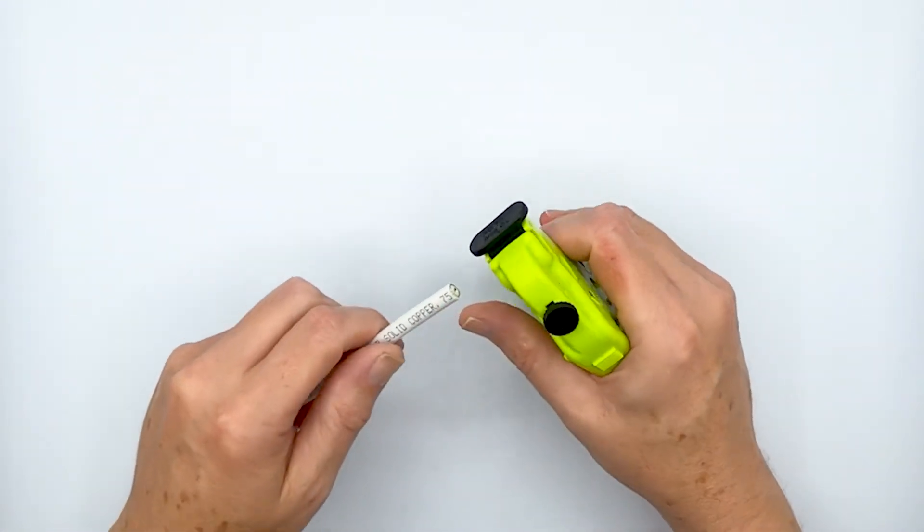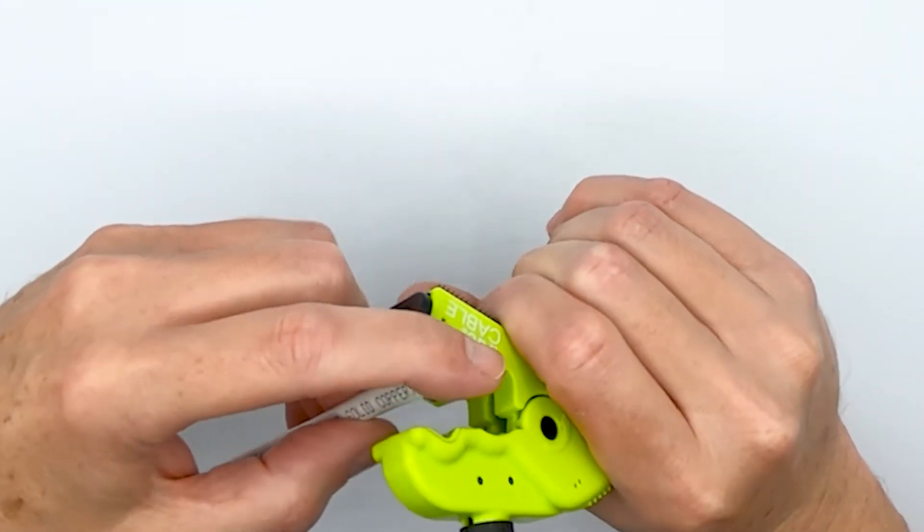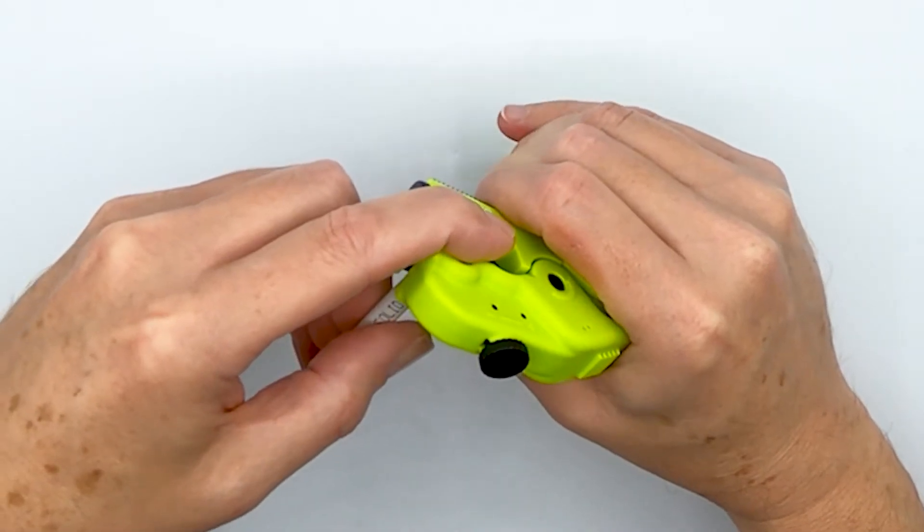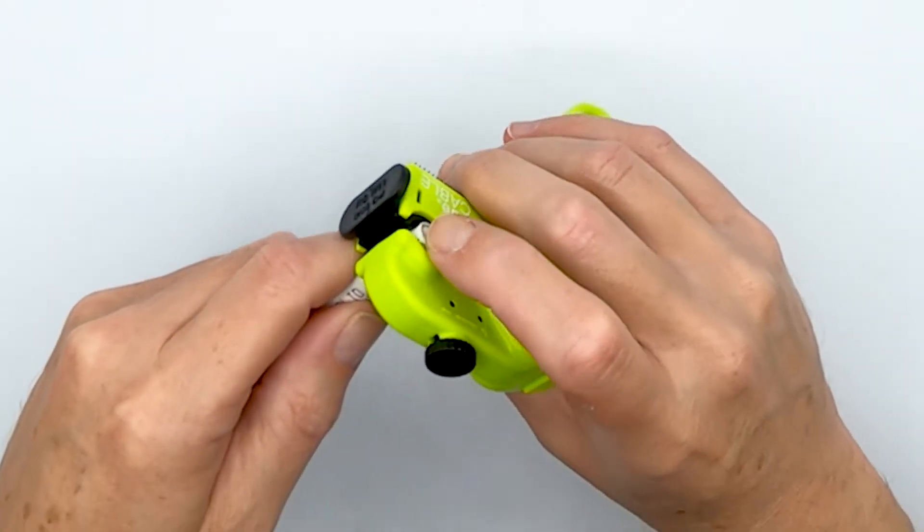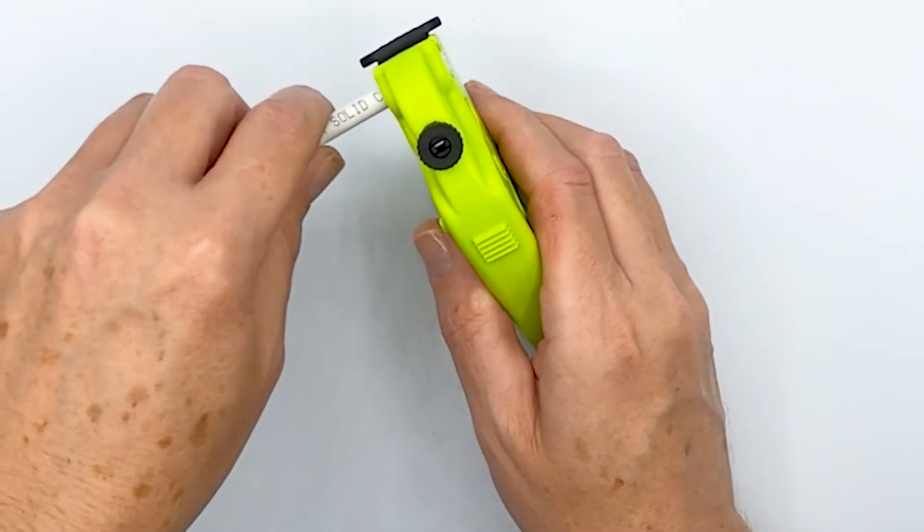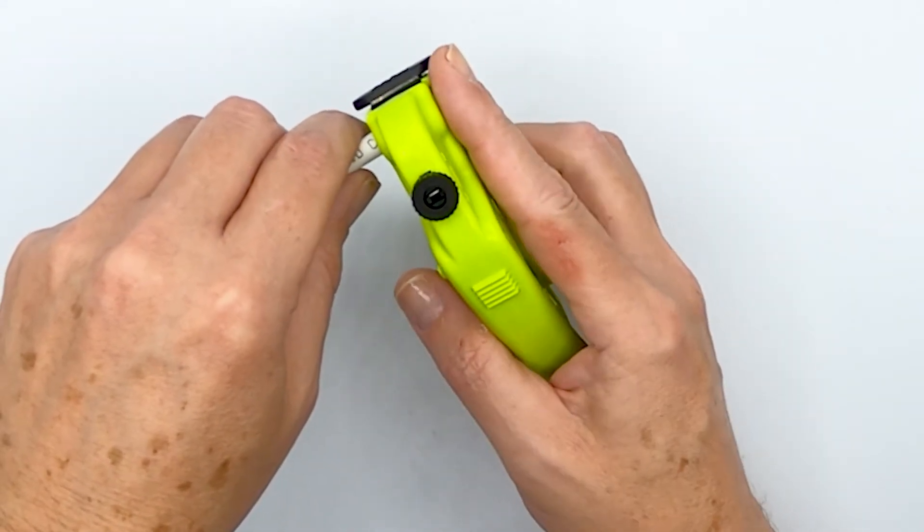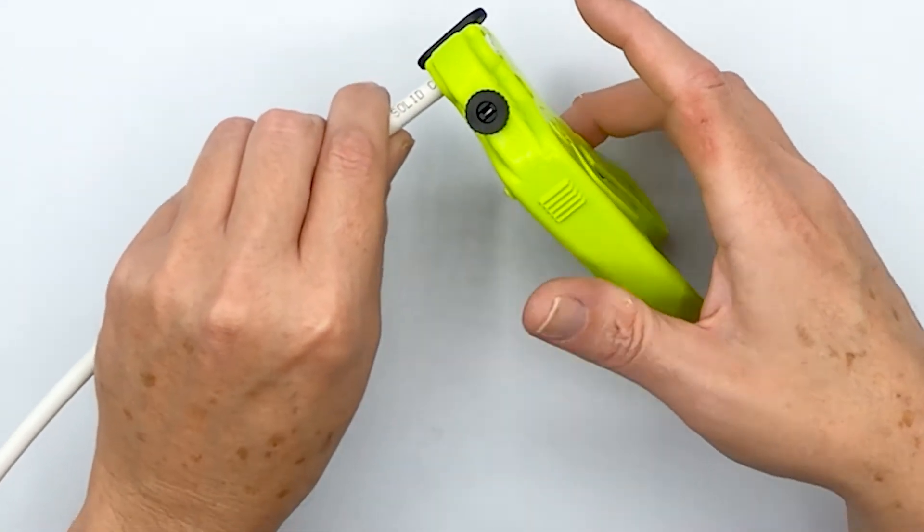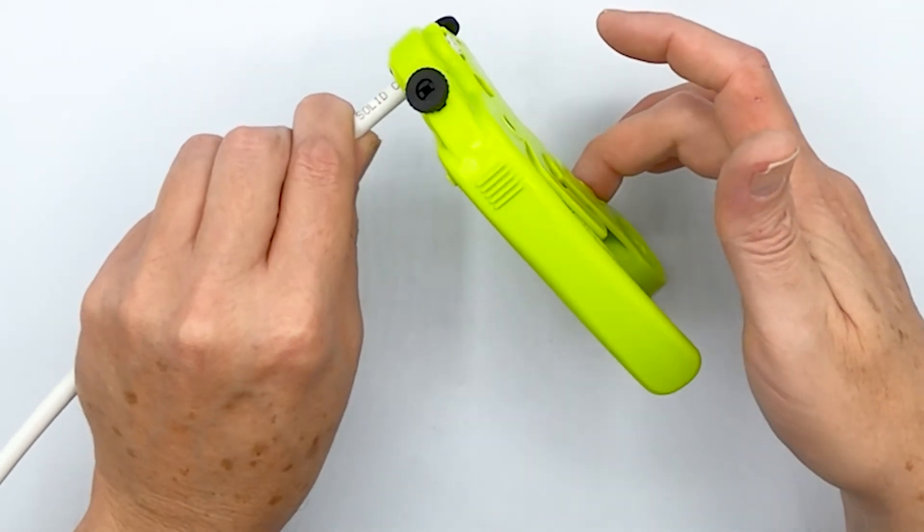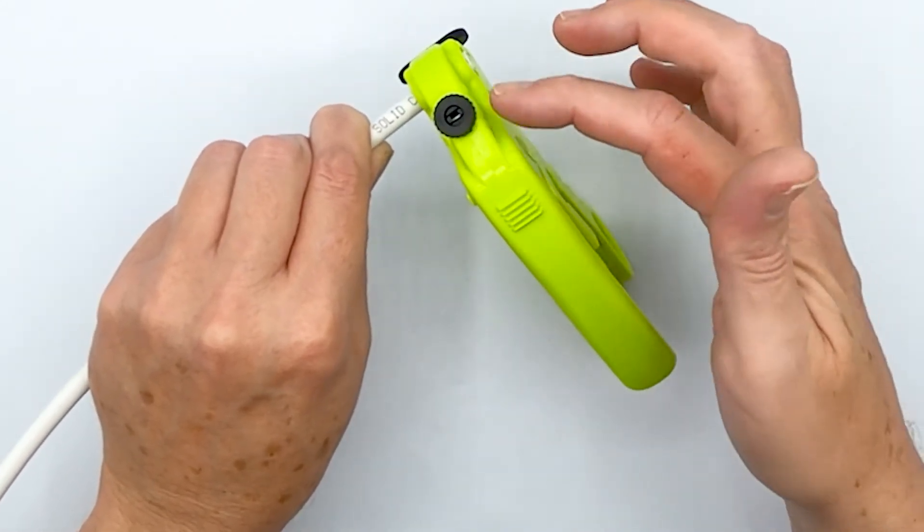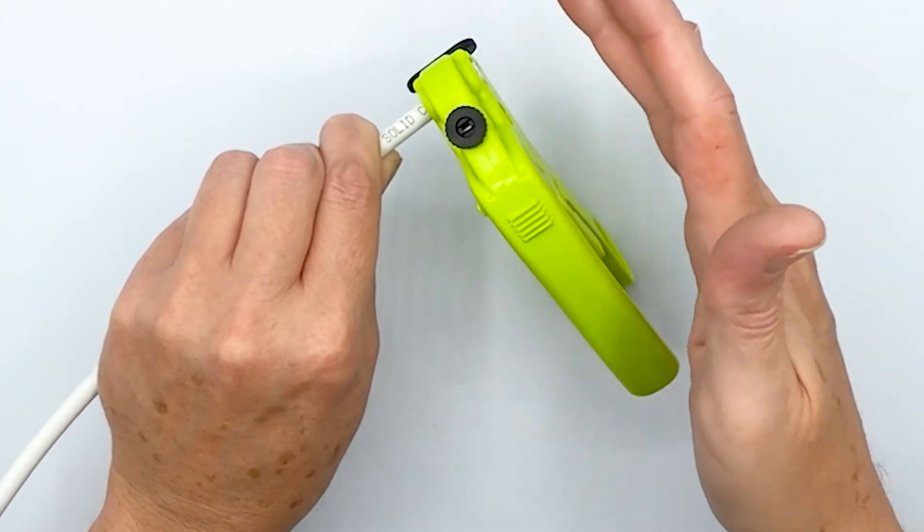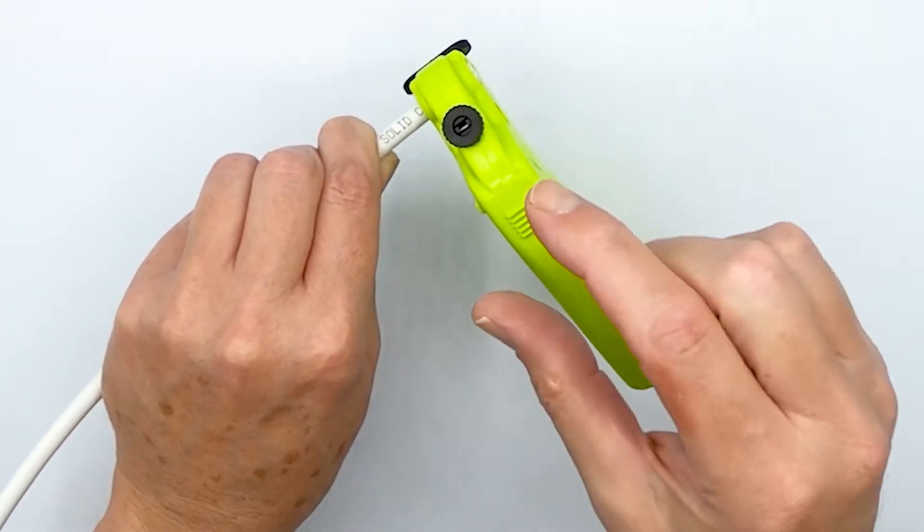You've got this cassette which is reversible for RG 59 or 6, or RG7 or 11. I've got it set for 59 and 6. The way you strip this cable is quite simple - you put the cable through and you put it right up to the green right here. It stops right at the end of the green.